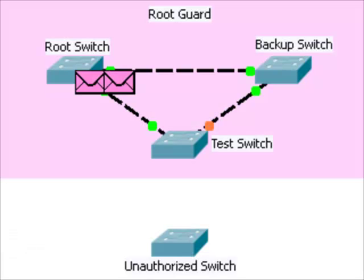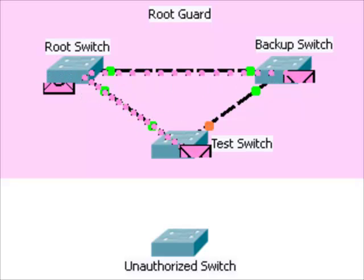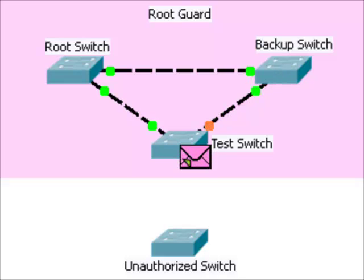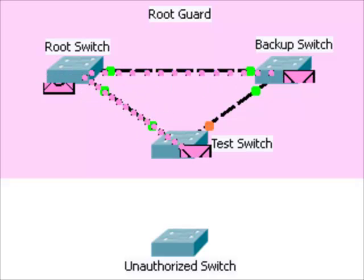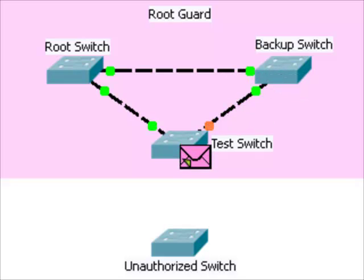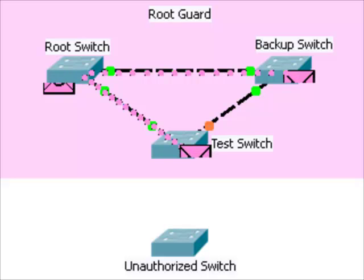Root Guard is a Cisco proprietary feature which protects the spanning tree topology from changing when unexpected superior BPDUs appear. A switch port with Root Guard on it will move into the root inconsistent state if it detects superior BPDUs. In this state, the switch port will not forward any frames.